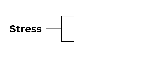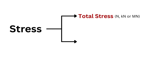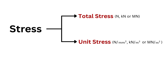Stress can be considered either as total stress or unit stress. Total stress represents the total resistance to an external effect, while unit stress represents the resistance developed by a unit area of cross-section.